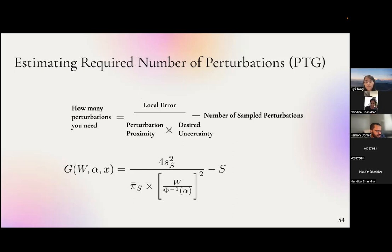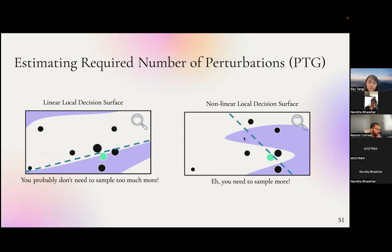Q: How is local error computed? A: It's basically just the MSE of the local regression — a goodness-of-fit measure. So if the local explanation is very accurate on nearby points and the model is locally linear, the error will be very low, and PTG will say you don't need many more perturbations to get a confident explanation.